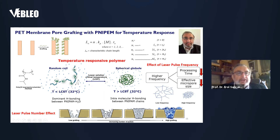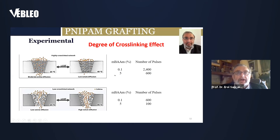Regarding the mechanism: below the LCST, dominant hydrogen bonding occurs between PNIPAM and water, giving a random coil with a longer end-to-end distance. Above the LCST, intramolecular hydrogen bonding occurs between PNIPAM chains, producing a compact spherical globule that allows higher transmission rates. The degree of cross-linking has an effect on transmission rates. We can control it by either the percentage of cross-linker in the solution or by number of pulses — lower cross-link network requires lower percentage of cross-linker or lower pulse numbers. This applies to both PET and PI.